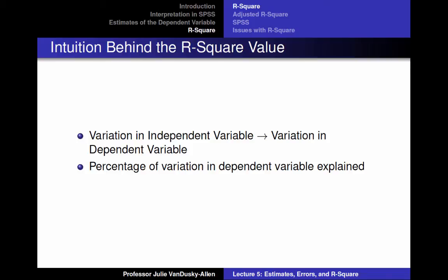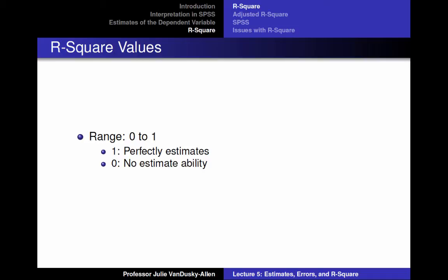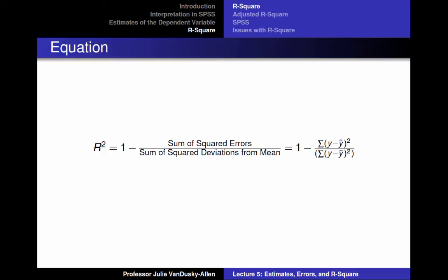Now I will teach you about the R-squared statistic associated with regression. Recall that in regression, we expect variation in the independent variable to explain variation in the dependent variable. The R-squared tells us how much of the variation in the dependent variable is explained. It ranges from 0 to 1: 1 means the regression equation perfectly estimates the dependent variable, and 0 means it does not estimate the dependent variable at all. The equation for R-squared is 1 minus the sum of the squared errors divided by the sum of the squared deviations from the mean.